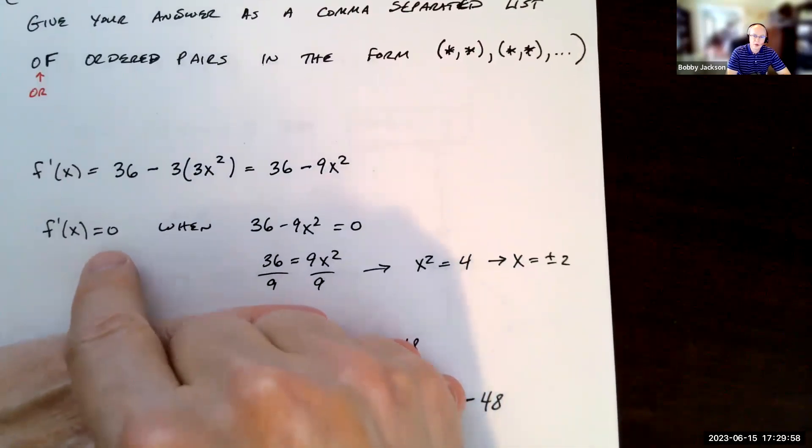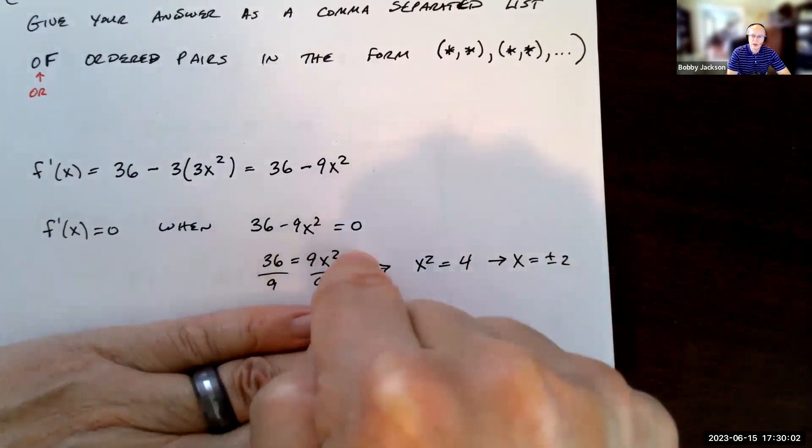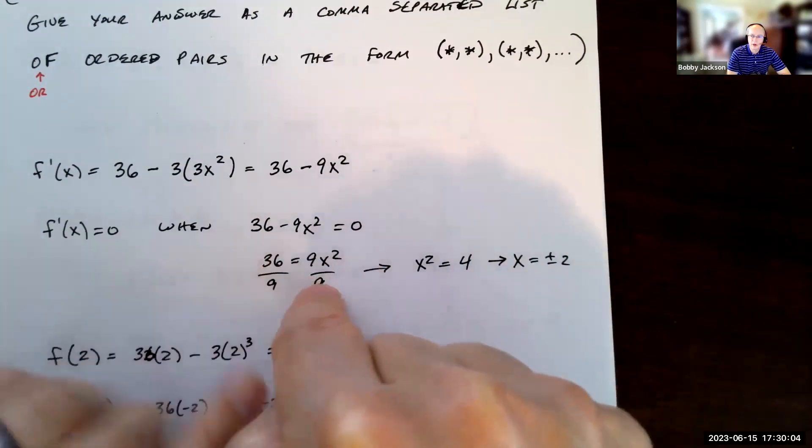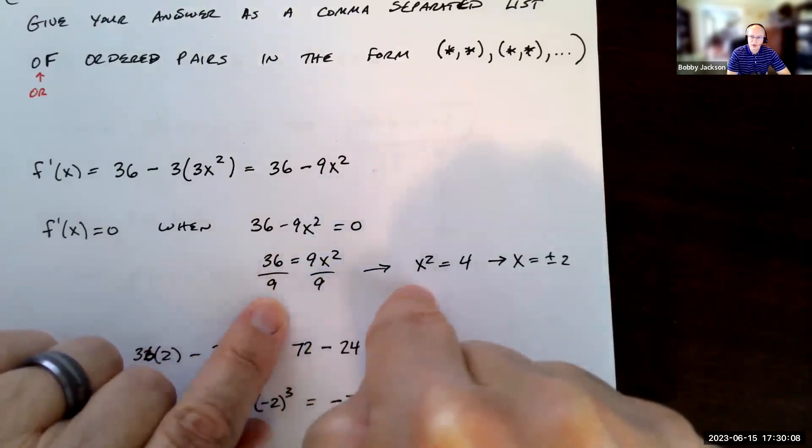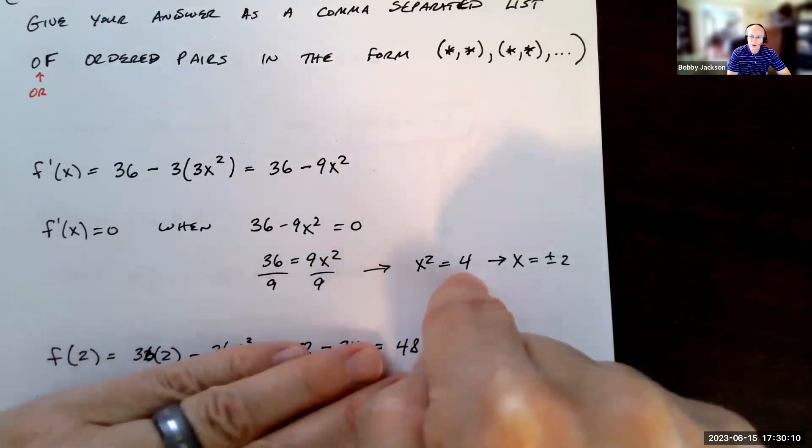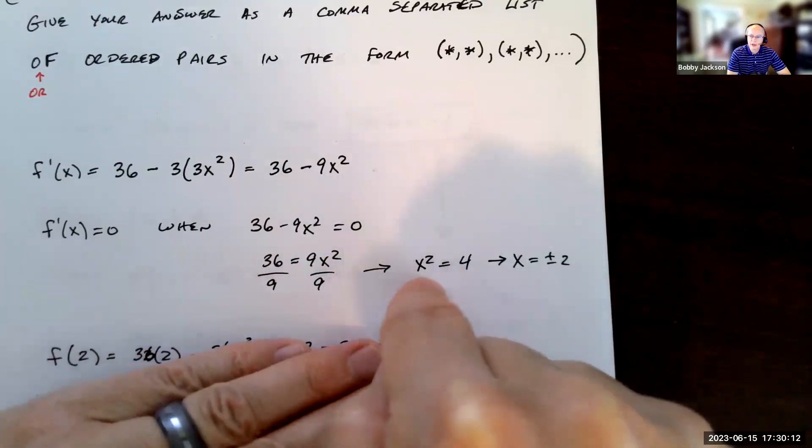Again, tangent lines are going to be horizontal when the derivative is zero. So I need to solve this equation. Add 9x² to both sides. Divide both sides by 9. I get x² = 4. 36 divided by 9 is 4. And then take the square root.